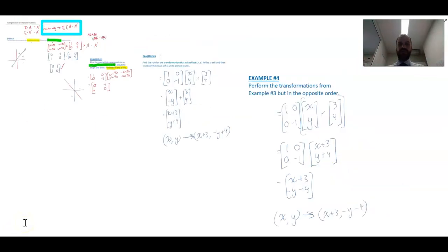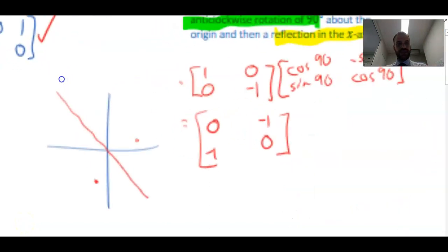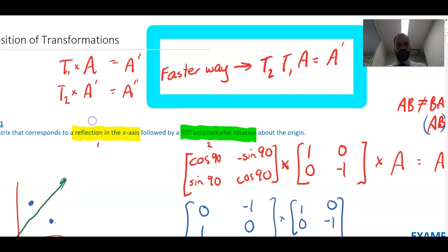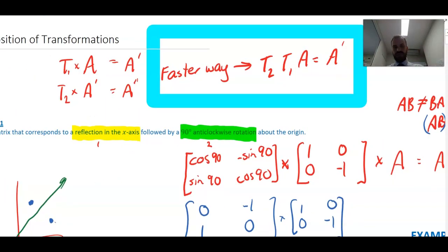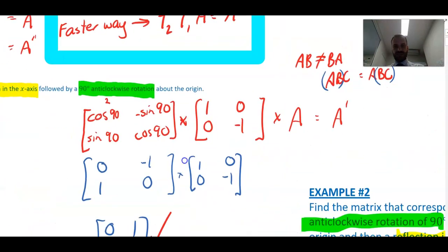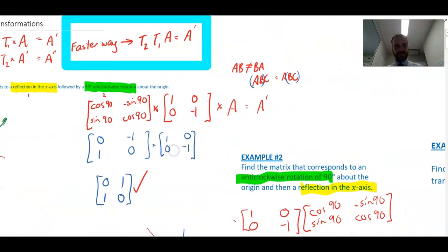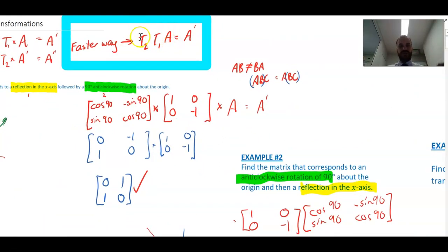The major thing to remember is that you need to work backwards: object, first transformation, second transformation — listed right to left in the matrix equation.